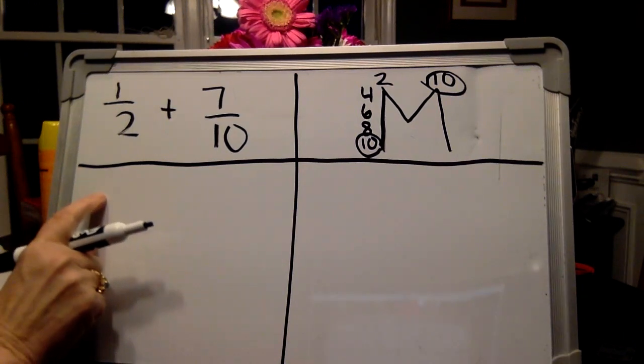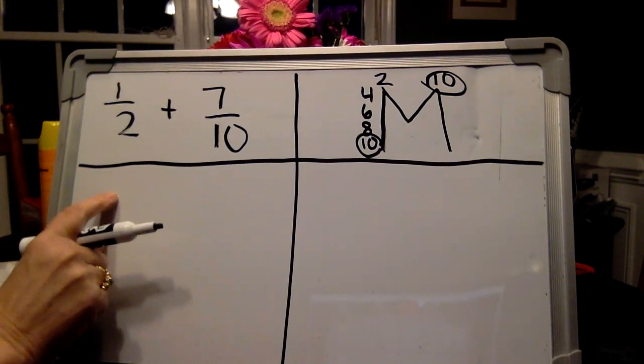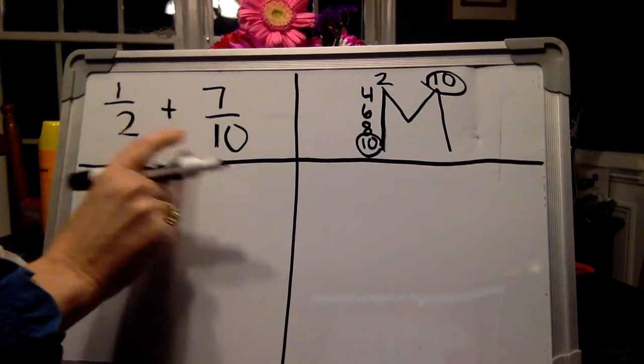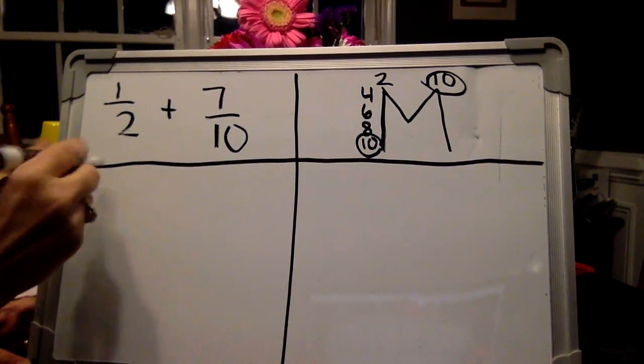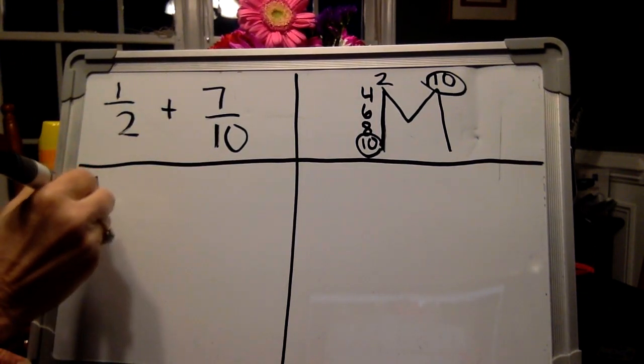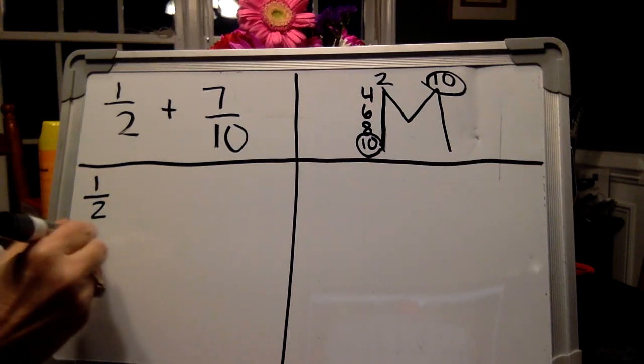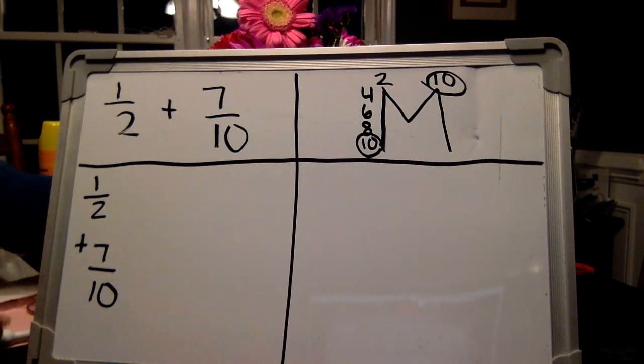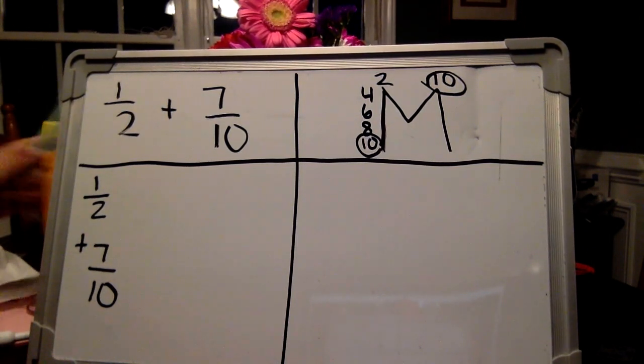All right, we're getting ready for square three, which tends to be the hardest. First, you're going to write your two original fractions up and down. Okay, to make it a little more clear for you, I'm going to make our new fractions in a different color.